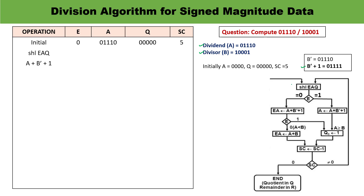At the first step, perform shift left on E, A, Q. After shifting left, the contents shift over: E becomes 0, A becomes 11100, and Q becomes 000. The fifth bit is always 0 because nothing is available there.